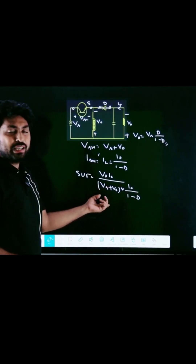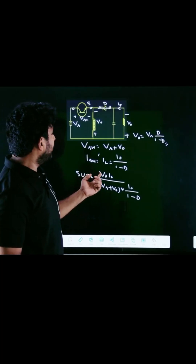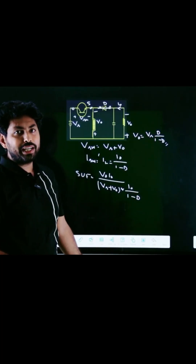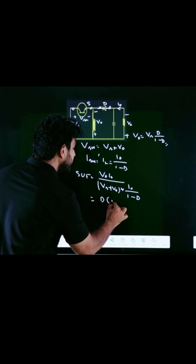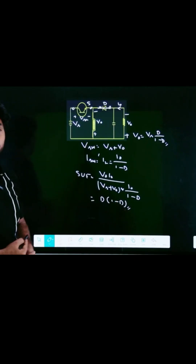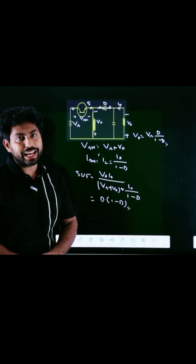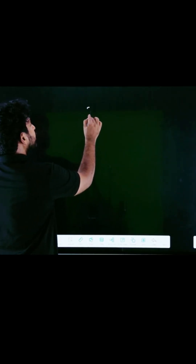Substituting V0 equals VS times D divided by (1 minus D) into the expression, V0 and I0 terms cancel out, giving the switch utilization factor as D times (1 minus D).